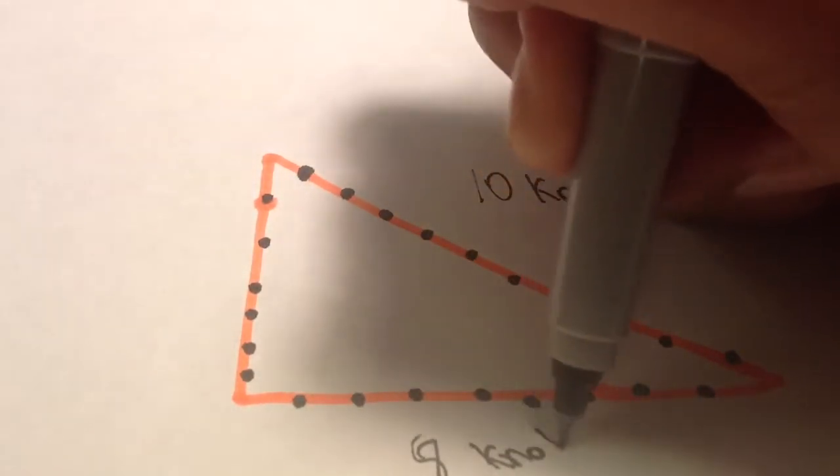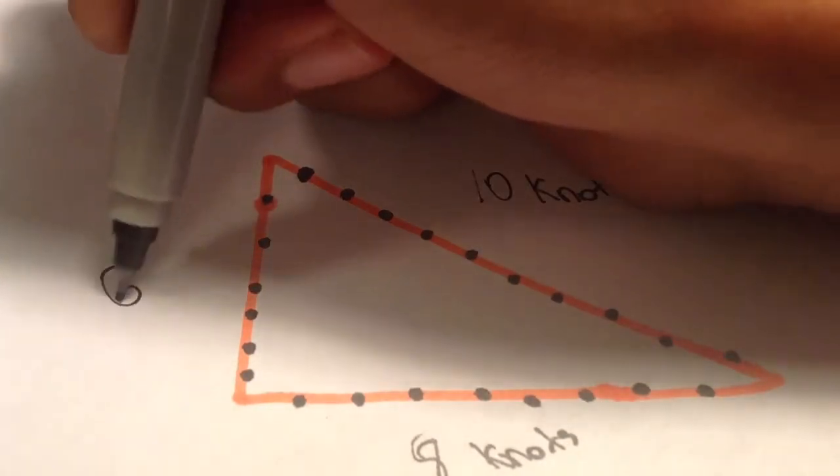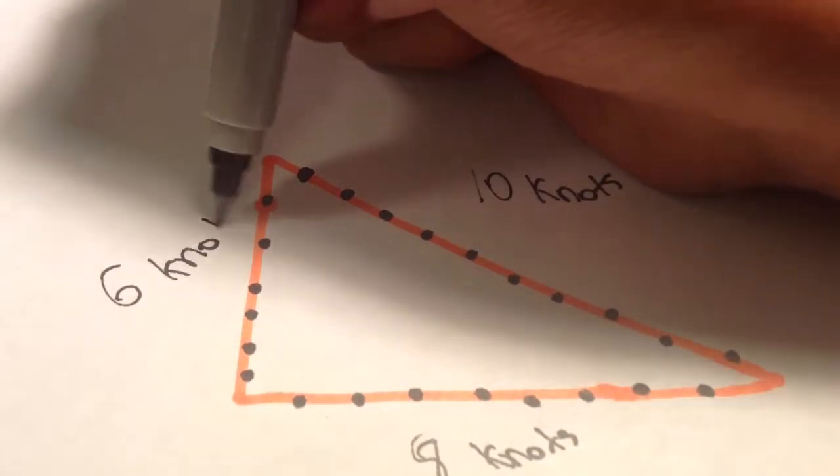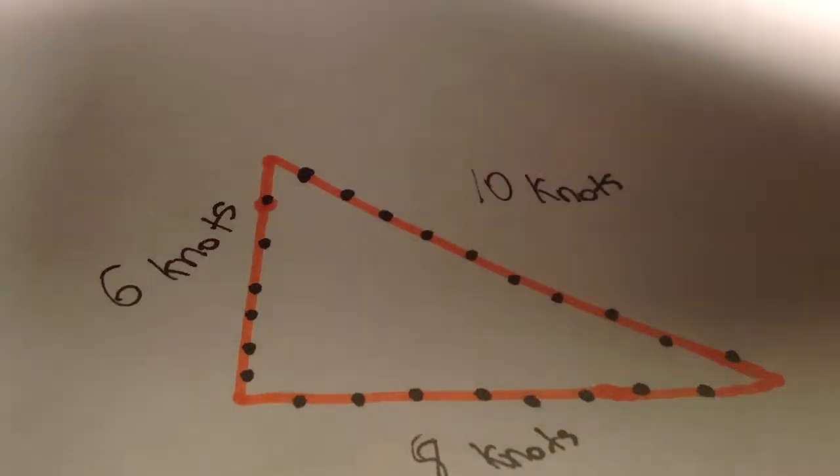We have 10 knots on the hypotenuse, 8 knots on the medium length, and then we have 6 knots on the shortest side.